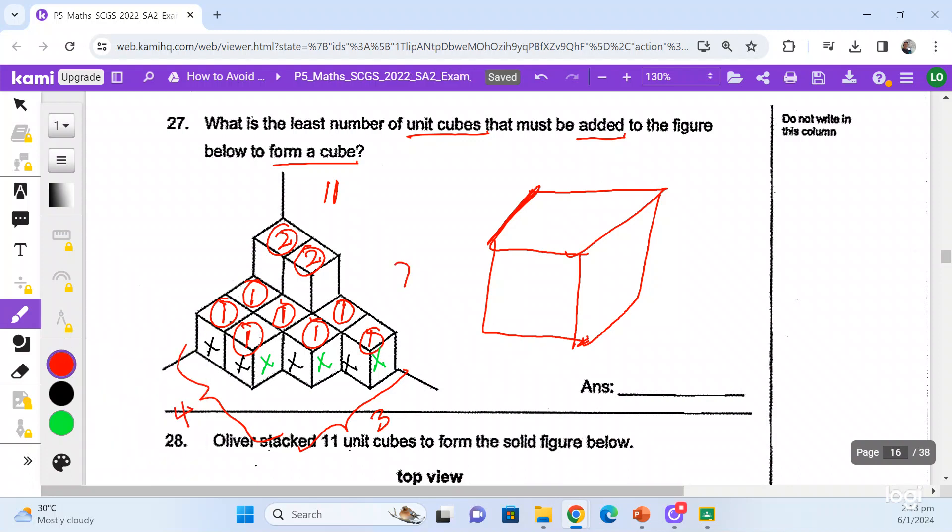And how about the height? The height of this solid figure is made of how many cubes? It's made of two. And if you look at all these numbers carefully, they are not equal. They are all different.